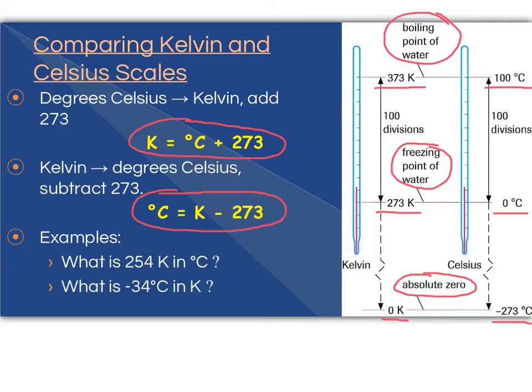The first example here, if I have Kelvin and I need to get to degrees Celsius, I'm going to use the formula that I'm putting a one behind. That means I am taking 254 and I am subtracting 273, which means I should get an answer of negative 19 degrees Celsius.